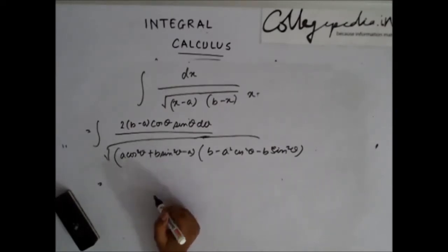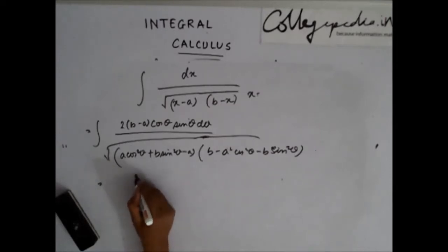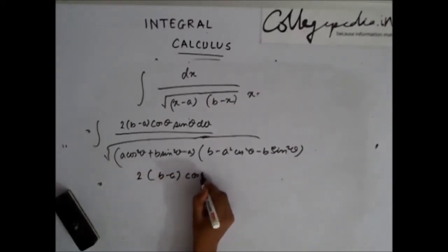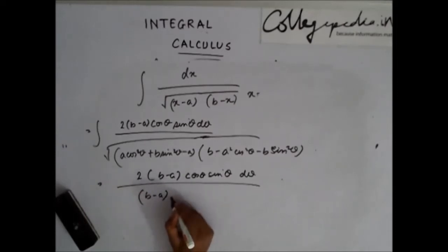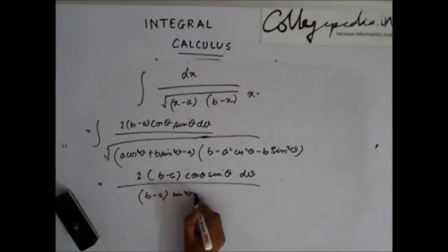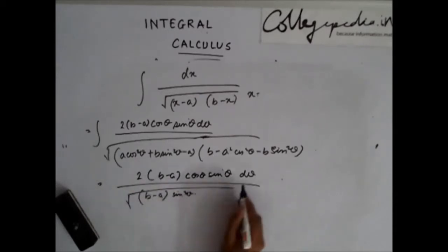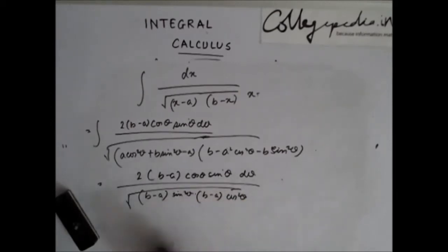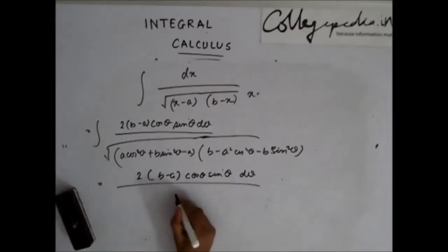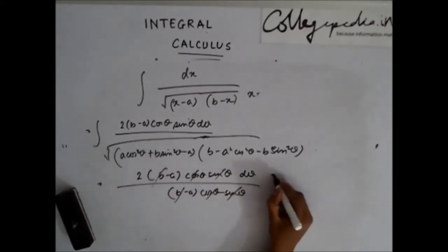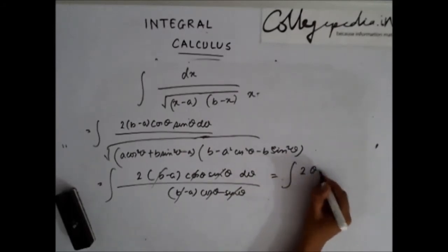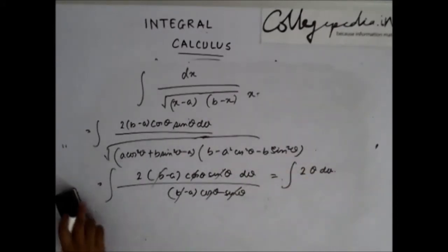Taking a common from the first factor gives (b − a) sin²θ, and from the second factor gives (b − a) cos²θ. Removing the square root, the denominator becomes (b − a) cosθ sinθ. This cancels with the numerator, leaving the integration of 2 dθ.